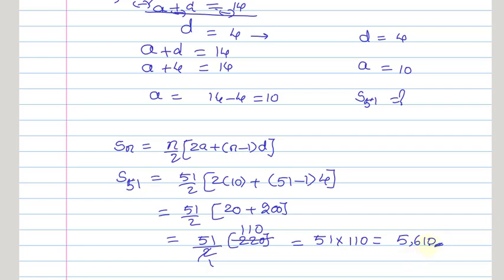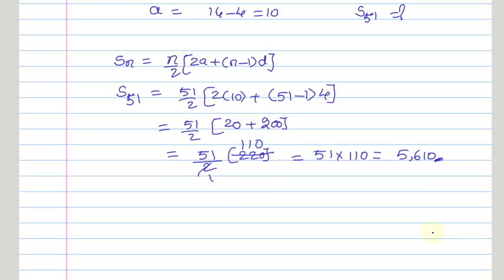So this is our required answer. The sum of 51 terms of the given AP is 5,610. Thank you friends for watching this video.